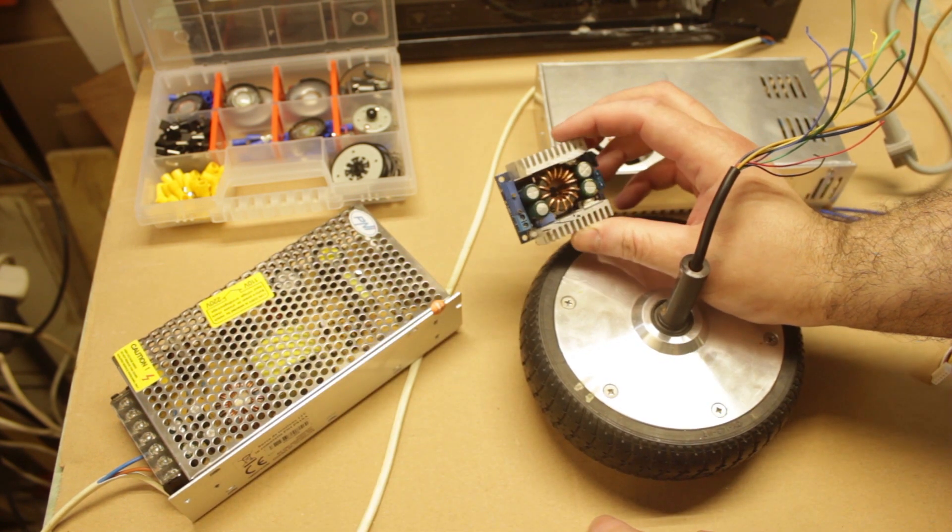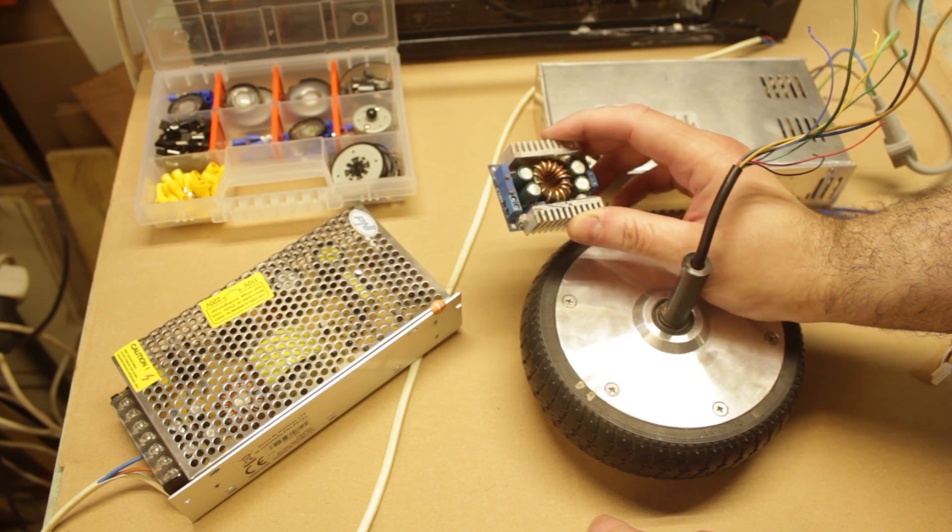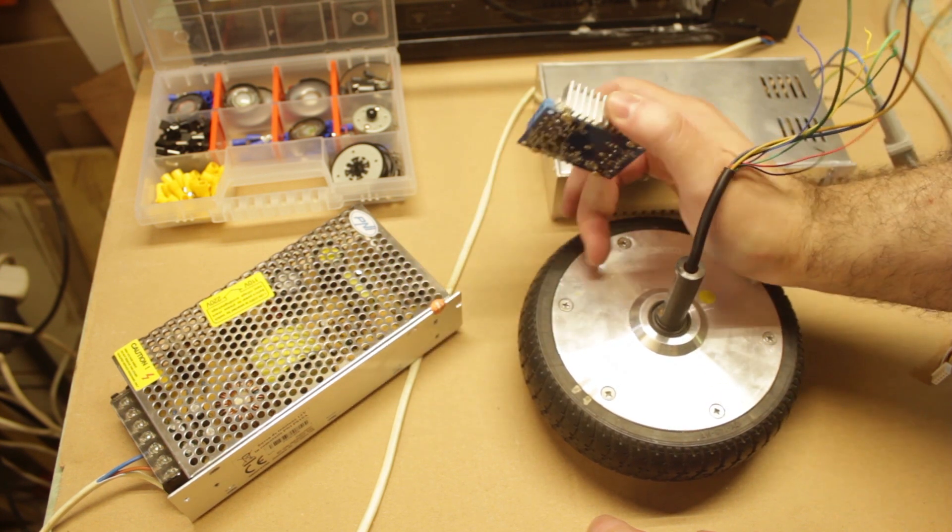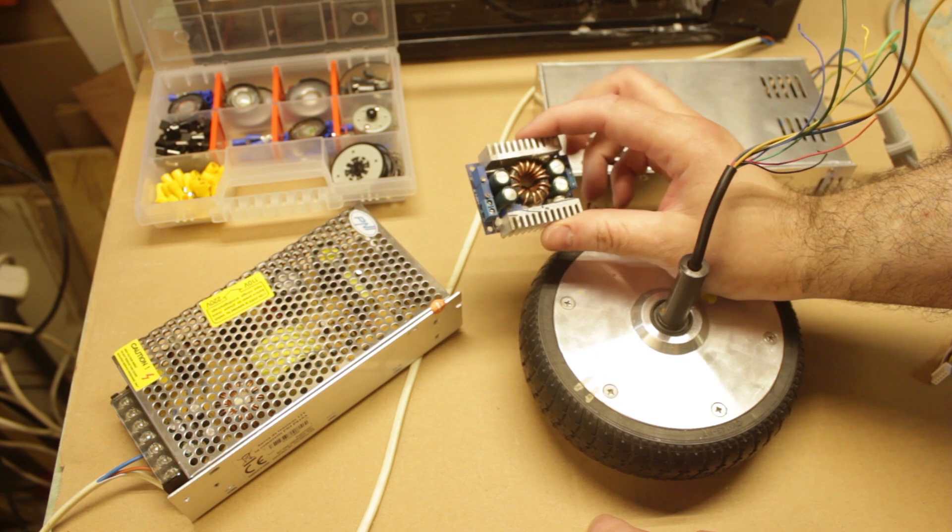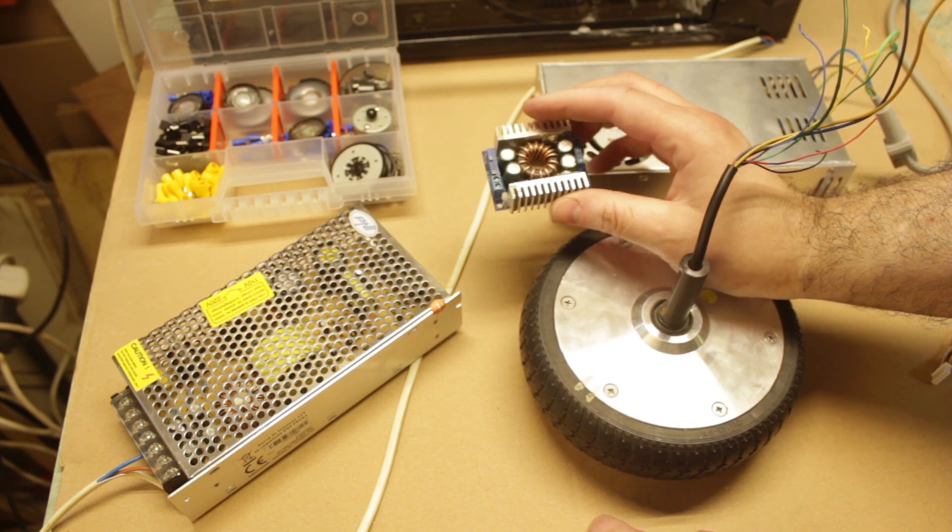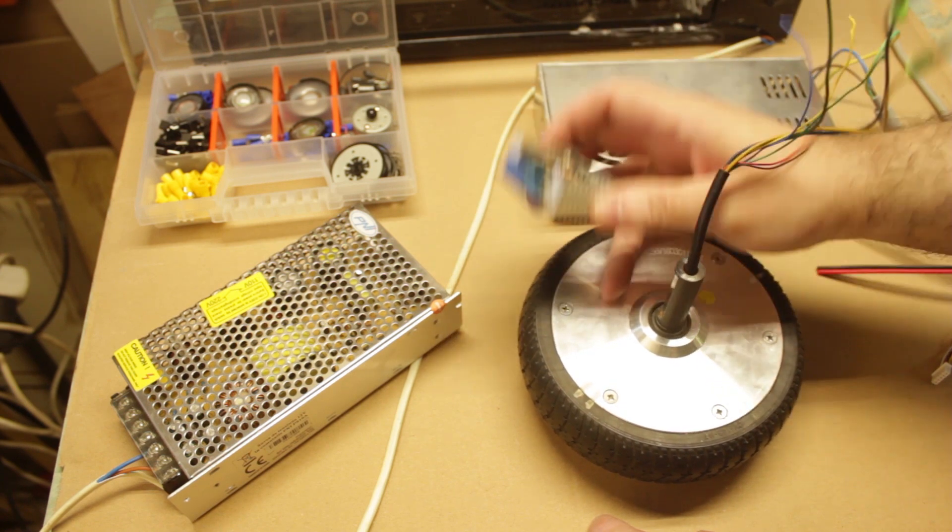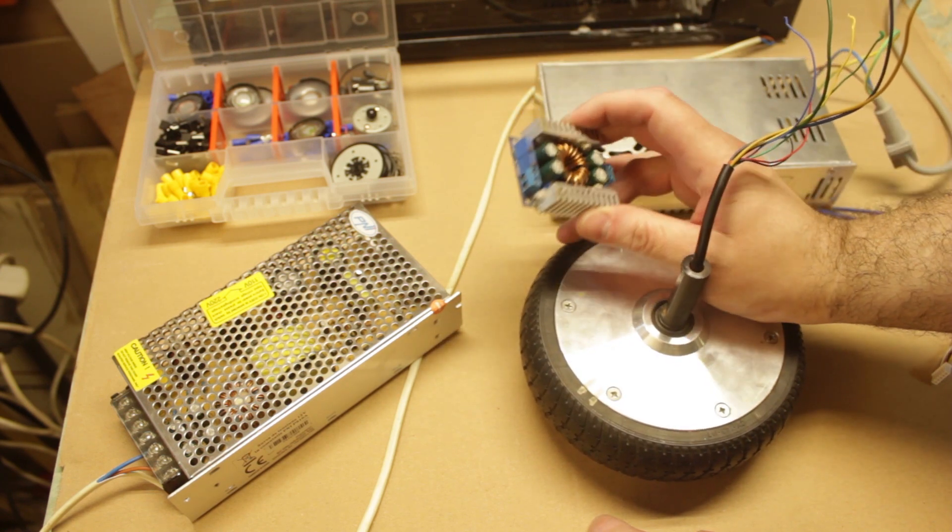However, you need something like a buck boost controller like this. Strictly speaking for this application going from 12 to 36, you would just need a boost controller, but these tend to be sold as buck boost. Anyway, it's more universal that way. This little unit might work up to 50 Watts. It certainly won't be able to power the full extent of this motor.